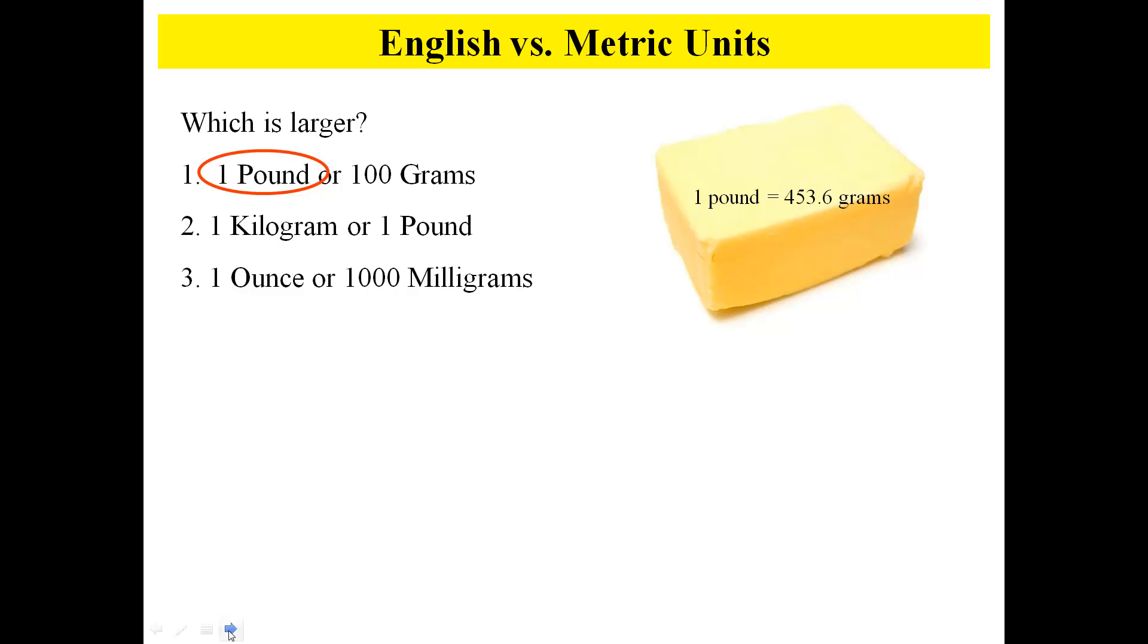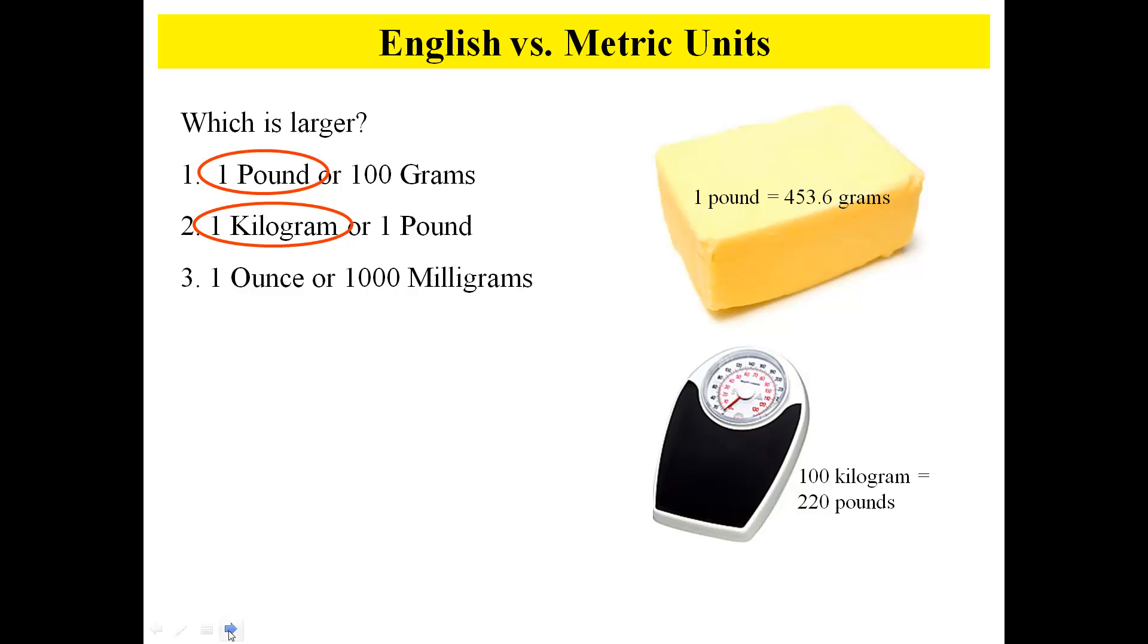One kilogram or one pound. If we know our prefix is kilo, kilo means 1,000, so we're probably looking at 1,000 grams or one pound. Sure enough, 100 kilograms is 220 pounds, so a kilogram is going to be bigger here.